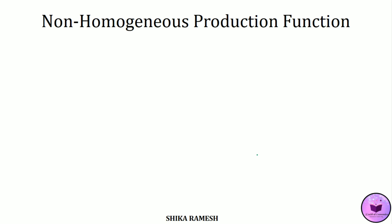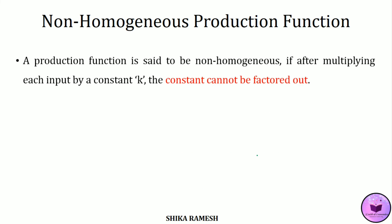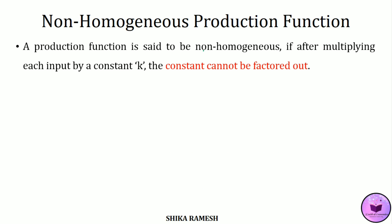Next is the non-homogeneous production function. A production function is said to be non-homogeneous if, after multiplying each of the inputs by a constant K, we cannot factor out the constant completely — then that production function is said to be non-homogeneous.